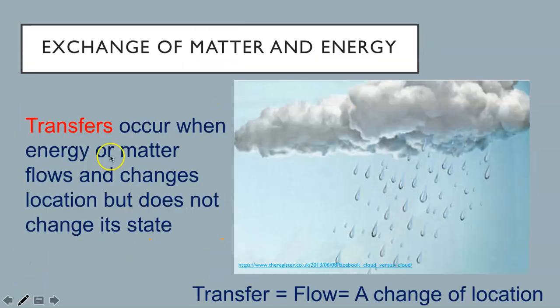Transfers occur when energy or matter flows and changes location but does not change its state. In this image, matter or rain is being transferred from the cloud to earth's surface. Rain is flowing from the cloud to earth's surface. The rain is in its same form or state at the top by the clouds as when it hits the ground. It is always liquid rain.